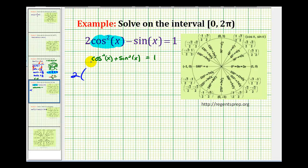We're going to have 2(1 - sin²(x)) - sin(x) = 1. Now let's clear the parentheses by distributing.